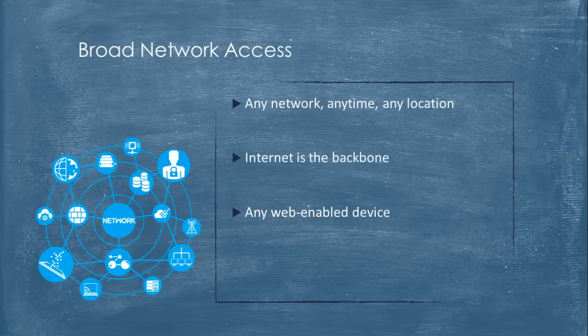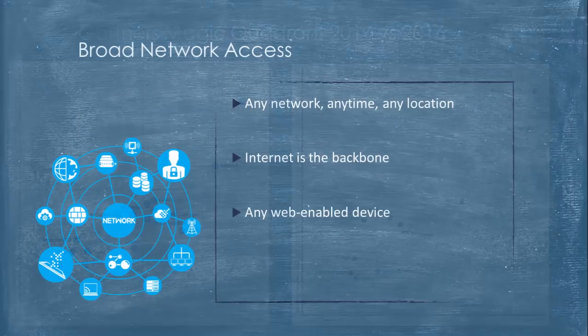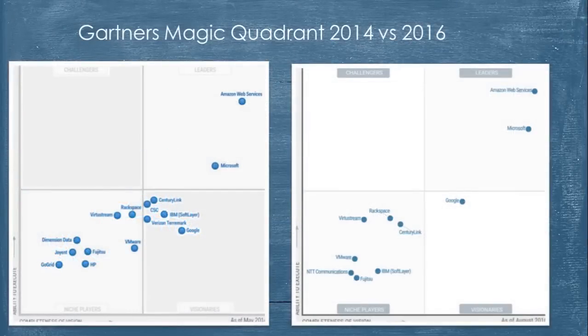Broad network access means you can access cloud services from anywhere, and the cloud provider must be available across various geographical locations. You can access those resources from any network at any time — morning or evening, from any location — as long as you have two things: internet access and a device with a compatible browser. These are the five key characteristics of cloud computing. In the next chapter, we'll learn about Gartner's Magic Quadrant and the market share that various cloud providers have.